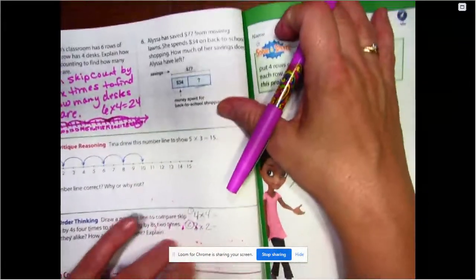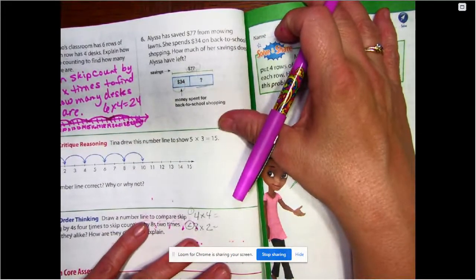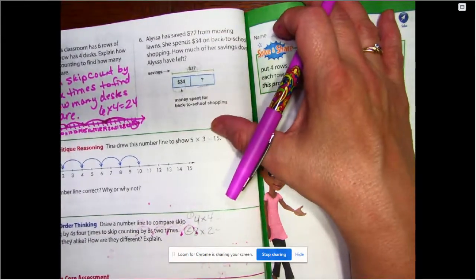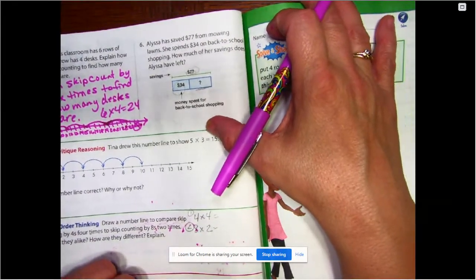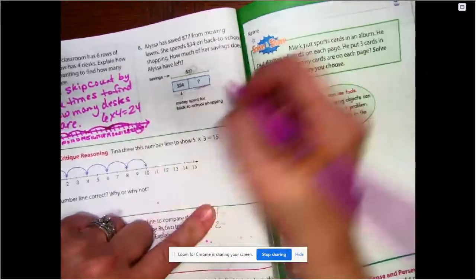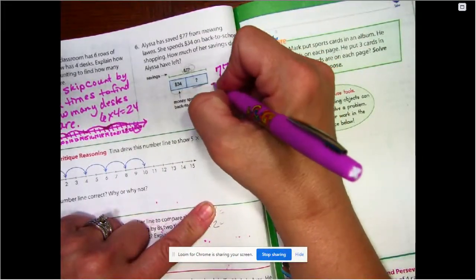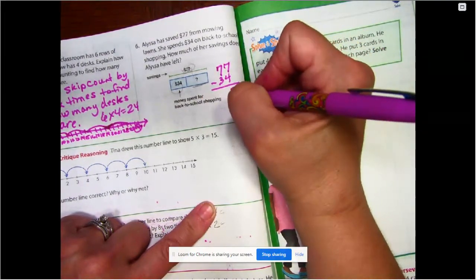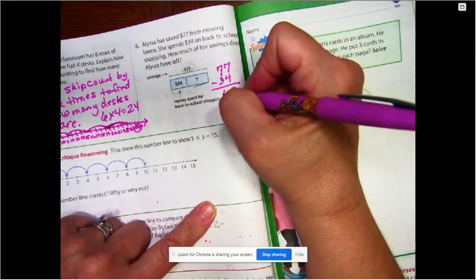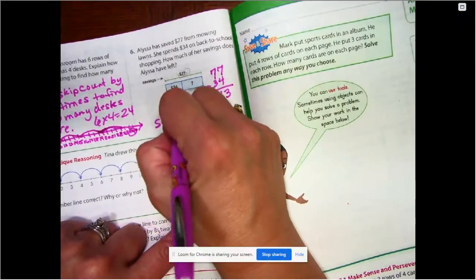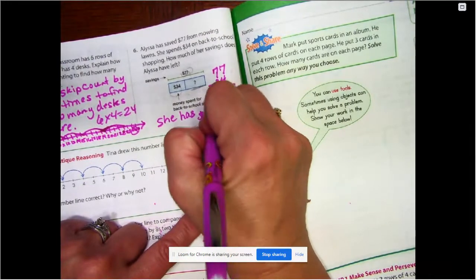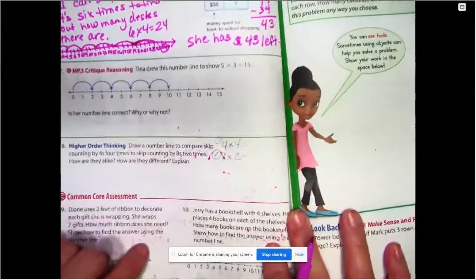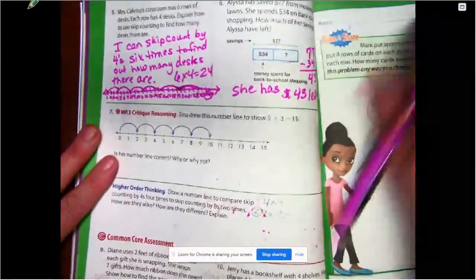Alyssa has saved $77 from mowing lawns. She spends $34 on back-to-school shopping. How much of her savings does Alyssa have left? So we're going to show the difference. So we have $77 minus $34. Seven minus four is three. Seven minus three is four. She has $43 left. Okay. Pause that if you need to.